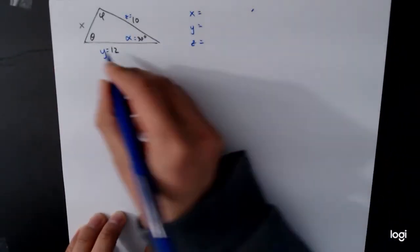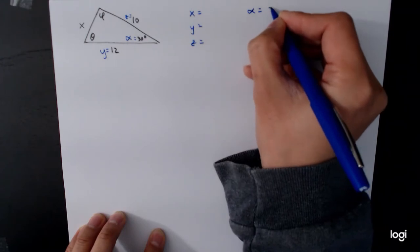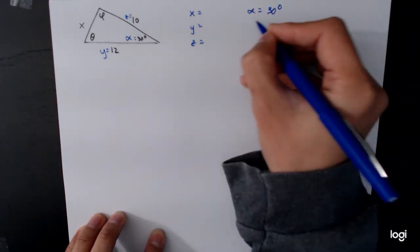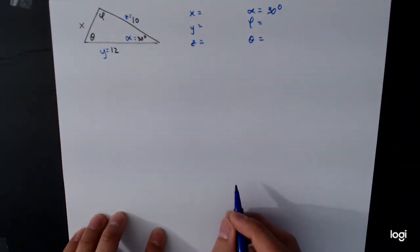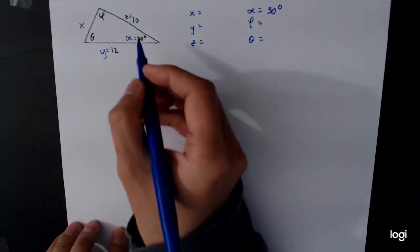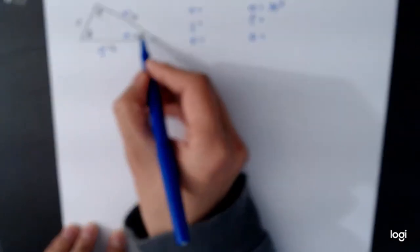Then we have alpha, x goes with alpha, y goes with phi, and theta goes with z. All right, so now we have to start solving this equation. Now you'll notice that we have side-angle-side. And so that's the information we have. Whoops, I forgot to label this. 12 and 10.